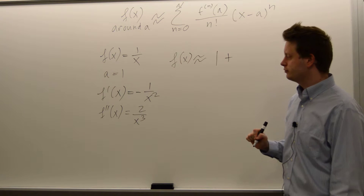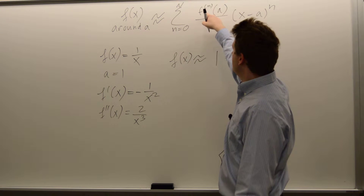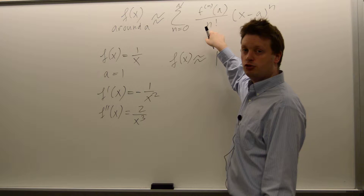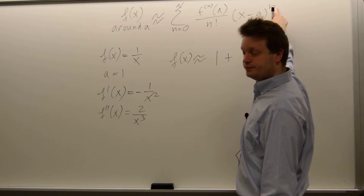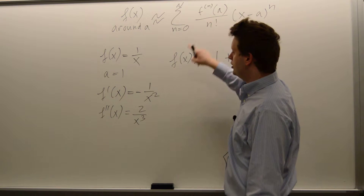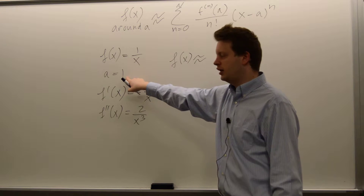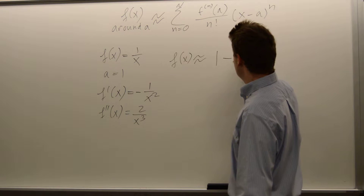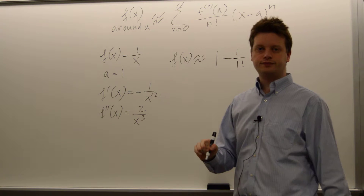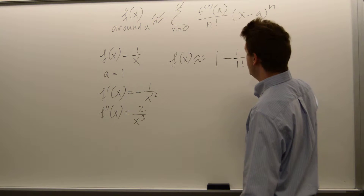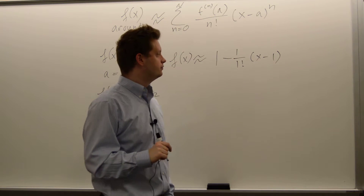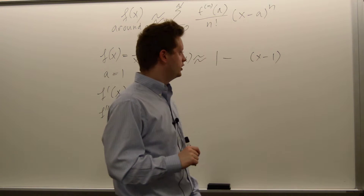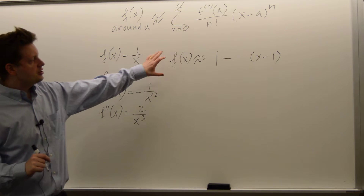The second term is the first derivative of the function at point a, times 1 over 1 factorial, times x minus a to the power of 1. The first derivative is minus 1 over x squared, evaluated at a equals 1, which is minus 1. So we get minus 1 times x minus 1. This gives us our first-order Taylor approximation.